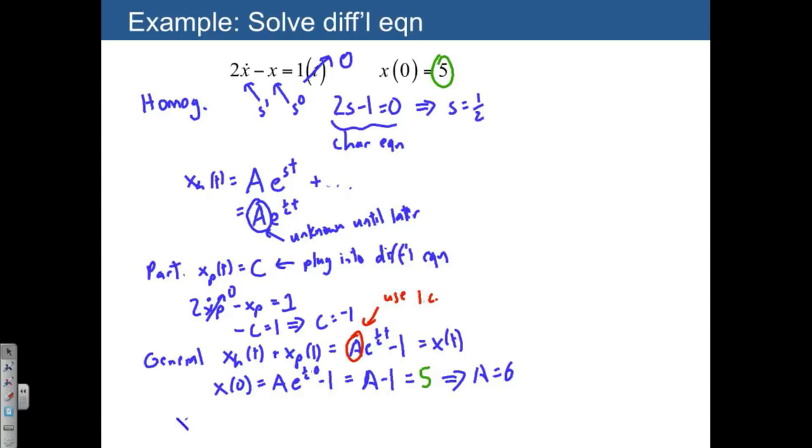We know that x of t is going to be equal to 6 e to the 1 half t minus 1. There's our solution.